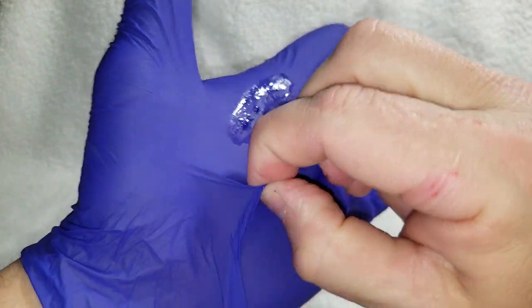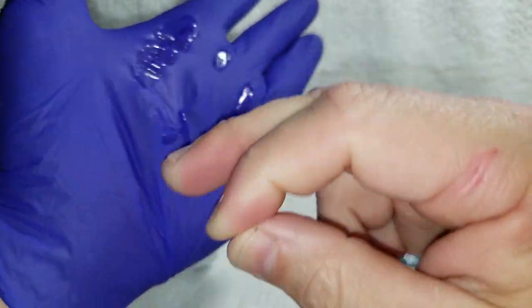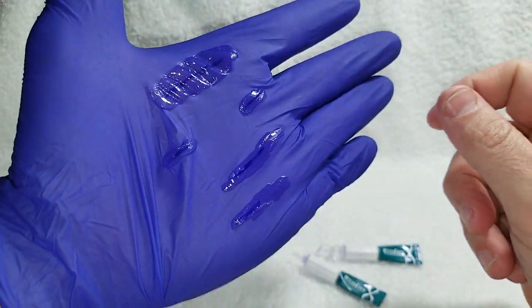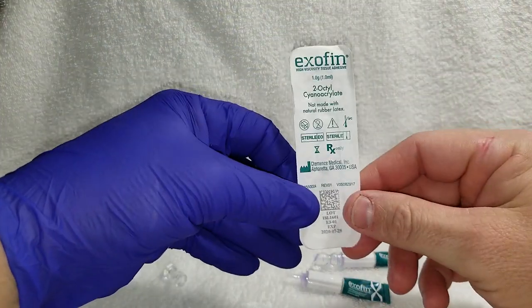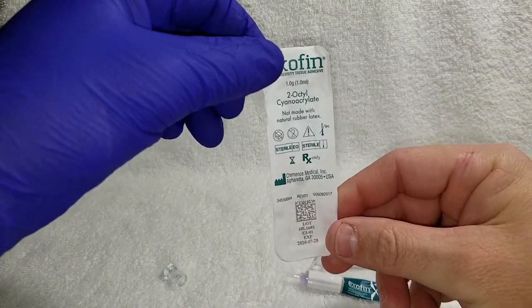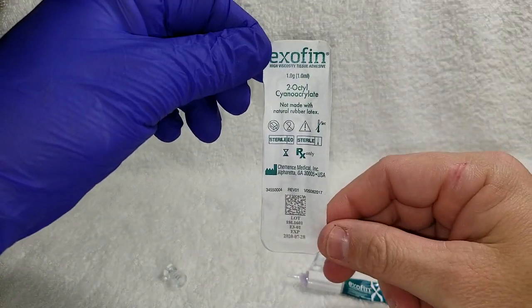So you can kind of see how this stuff stretches, it flexes and does really well. So that's the tutorial on how to use the Exofen tissue adhesive in the emergency department setting. Thank you.